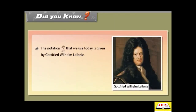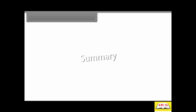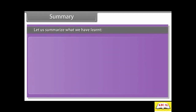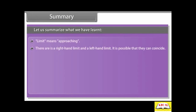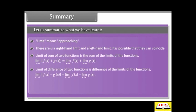Did you know? The notation dy/dx that we use today was given by Gottfried Wilhelm Leibniz. The calculus we use in this era was developed by Sir Isaac Newton. Summary: limit means approaching; there is a right-hand limit and a left-hand limit, and it is possible that they can coincide. Limit of sum of two functions is the sum of the limits: limit x→a of [f(x) + g(x)] = limit x→a of f(x) + limit x→a of g(x). Limit of difference of two functions is the difference of the limits: limit x→a of [f(x) - g(x)] = limit x→a of f(x) - limit x→a of g(x).